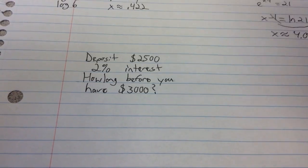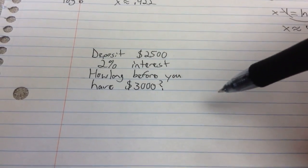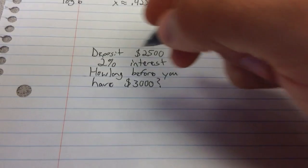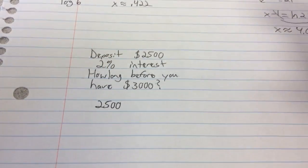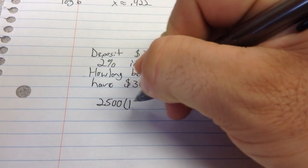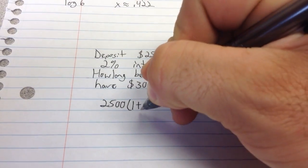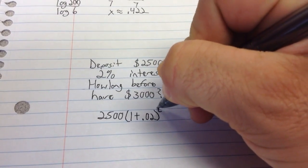Now what we're going to do here is we're going to do interest that's added once a year. So if you set up an equation for this, you're going to see $2,500 is your initial deposit multiplied by 1 plus the rate of 0.02, don't forget to move your decimal place, raised to the time.